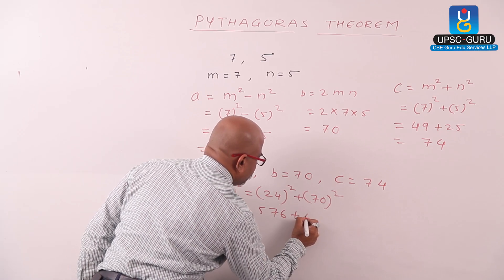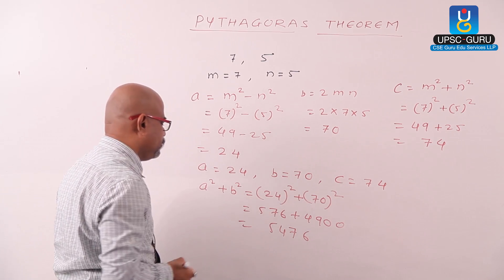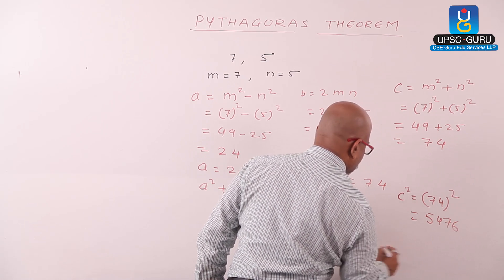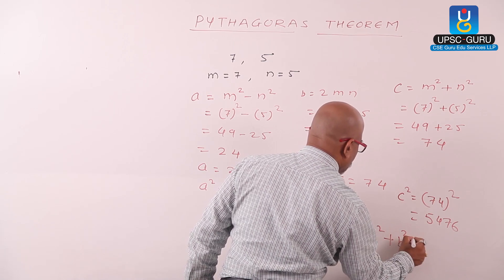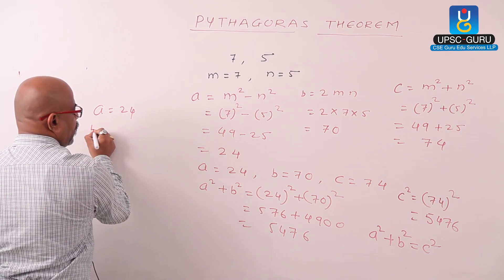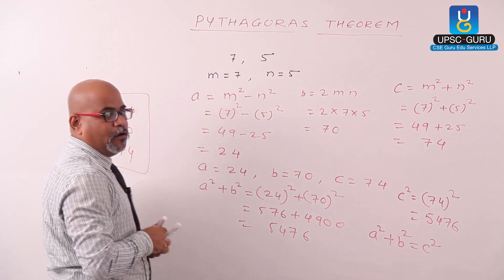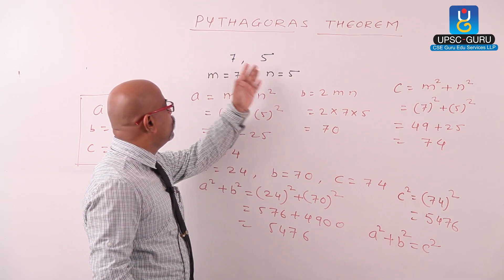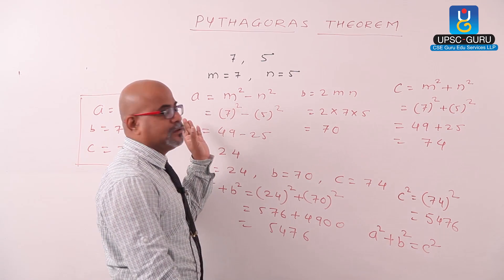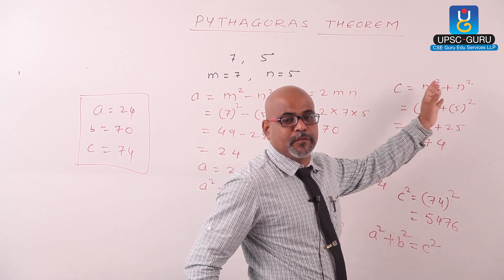24 squared plus 70 squared equals 576 plus 4900, which is 5476. And c squared — 74 squared — also equals 5476. Therefore a squared plus b squared equals c squared, so the three numbers a equals 24, b equals 70, and c equals 74 form a Pythagorean triplet. From any two numbers m and n, we can find a Pythagorean triplet using: m squared minus n squared, 2mn, and m squared plus n squared.